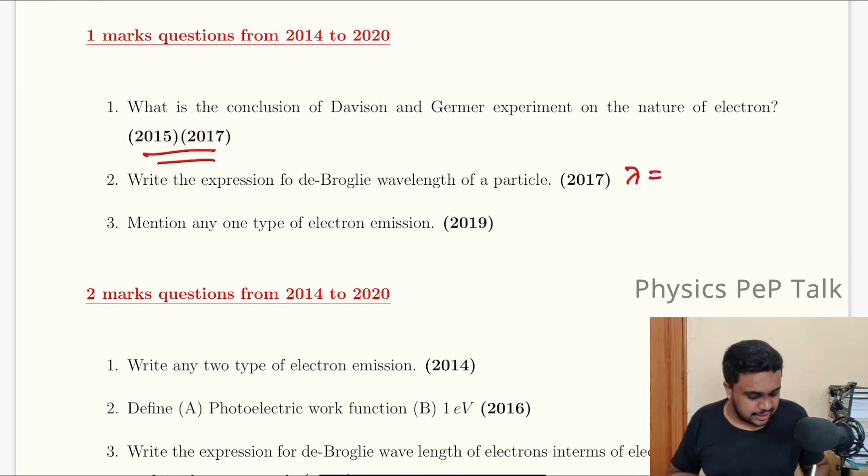De Broglie wavelength equation: lambda equals h by root of 2MeV. This is in terms of accelerating potential. Or lambda equals h by root of 2Mk. This is in terms of kinetic energy.